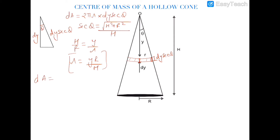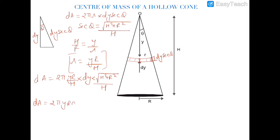So dA, the elemental area of this ring, will be equal to 2πr where r = yR/h, multiplied by dy, multiplied by sec theta = √(h² + r²)/h. Therefore dA = 2π · yR · dy · √(h² + R²) / h².